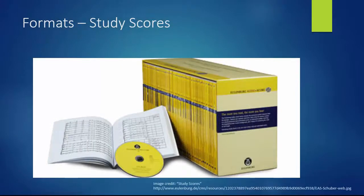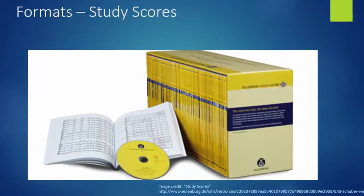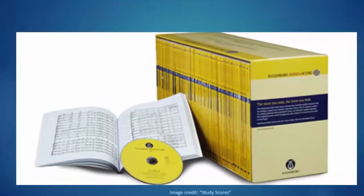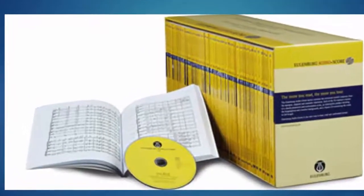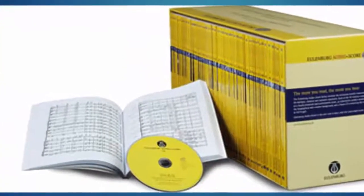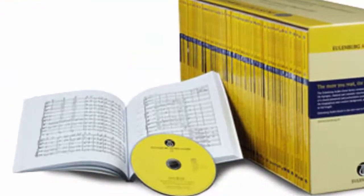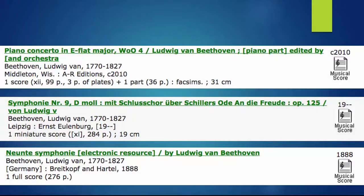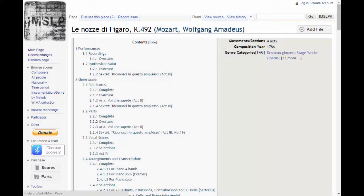Study scores are also known as miniature scores or pocket scores. These are photographic reproductions of the full score in a reduced size for instrumental and vocal works. These scores are designed for studying or for use while listening to music. Knowledge of the various score formats will help when searching for scores in the library catalog, in score databases, or in online repositories such as IMSLP.